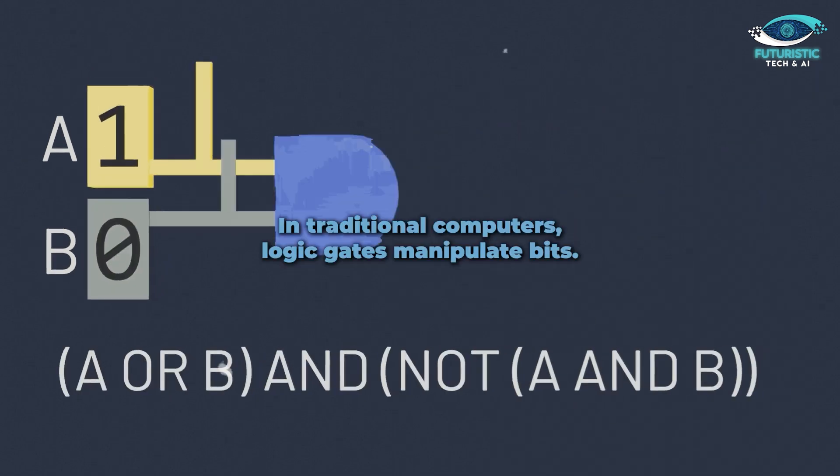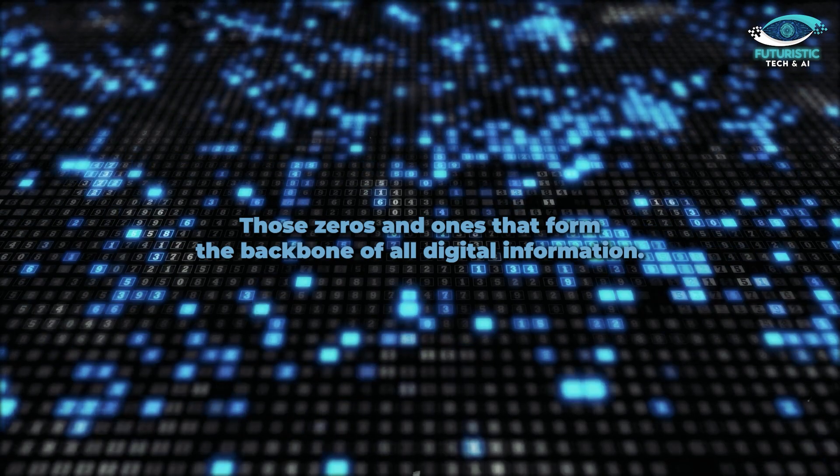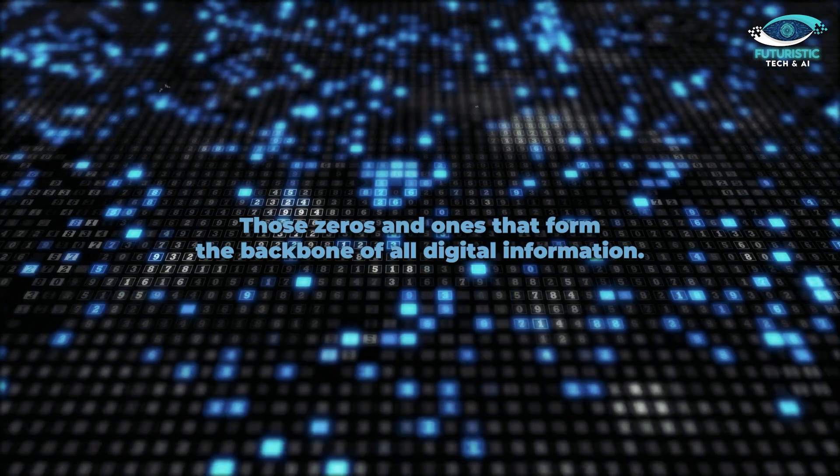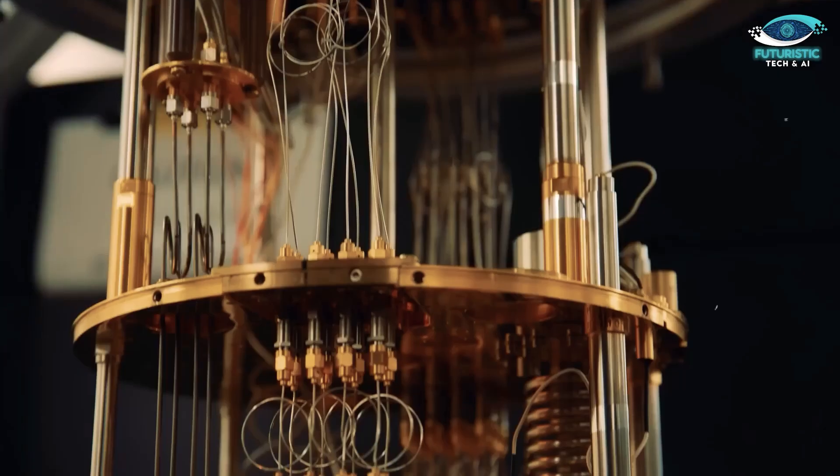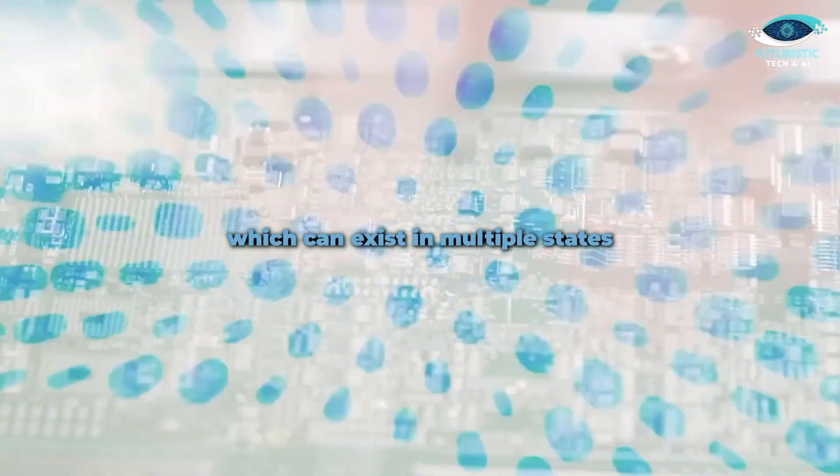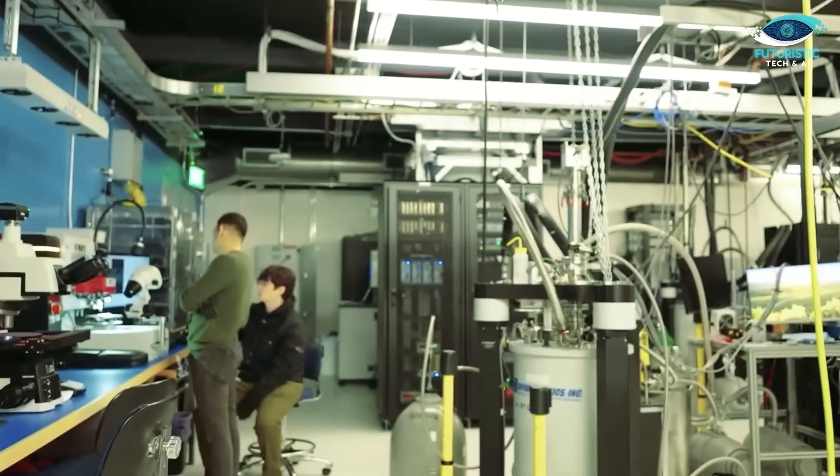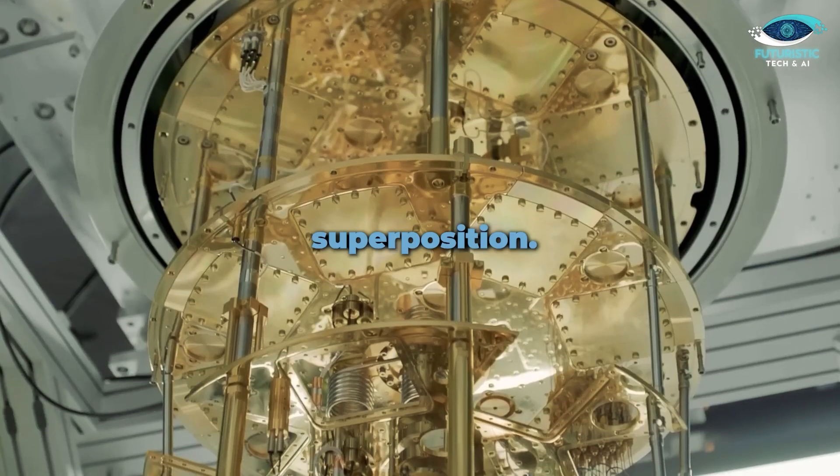In traditional computers, logic gates manipulate bits, those zeros and ones that form the backbone of all digital information. On the other hand, in quantum computing, these operations are performed on qubits, which can exist in multiple states simultaneously thanks to a property called superposition.